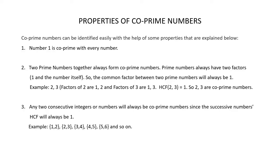Let's understand a few properties of co-prime numbers. Co-prime numbers can be identified easily with the help of some properties. The first property: the number 1 is co-prime with every other number. This means that 1 and any other number always form a set of co-prime numbers.